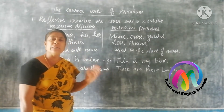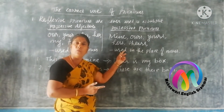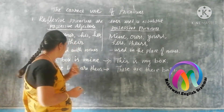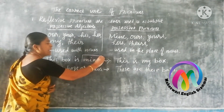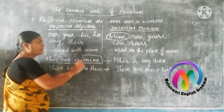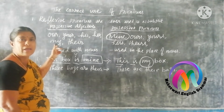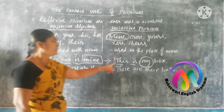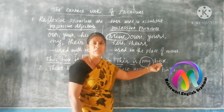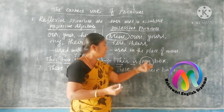The possessive pronoun is used in the place of noun — it is not used with a noun. See the example clearly. 'This box is mine' — here 'mine' is a possessive pronoun. 'This box' is the subject and 'mine' is used in the place of noun. Whereas 'my' in 'This is my box' is a possessive adjective, used with the noun 'box.'